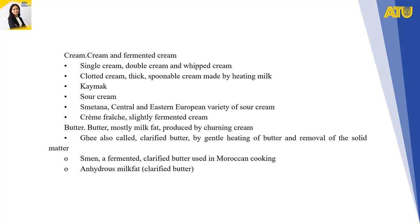In Kazakhstan, high-fat cream products are also popular. Sour cream products include smetana, a Central and Eastern European variety of sour milk cream, and crème fraîche, a slightly fermented fresh cream. Butter is mostly milky fat produced by churning cream. Ghee, also called clarified butter, is made by gentle heating of butter and removal of the solid matter. Smen is a fermented clarified butter used in Moroccan cooking, and anhydrous milk fat is another classified butter product.